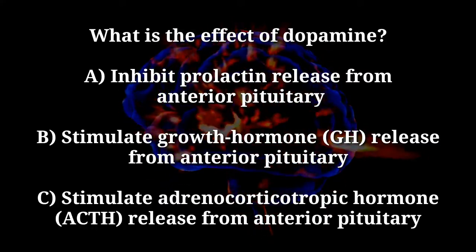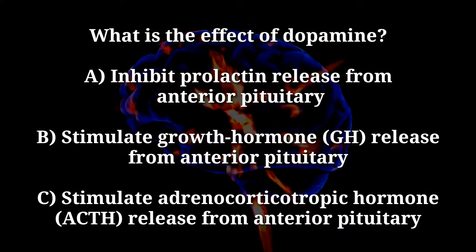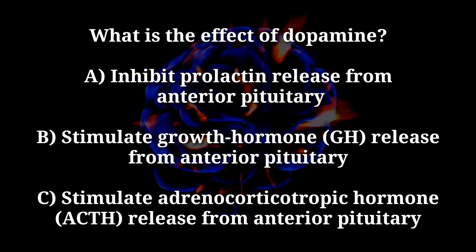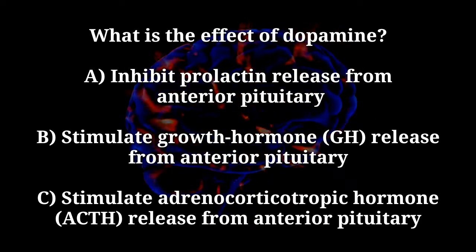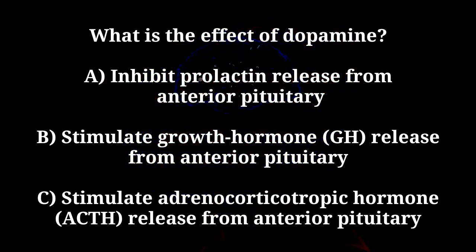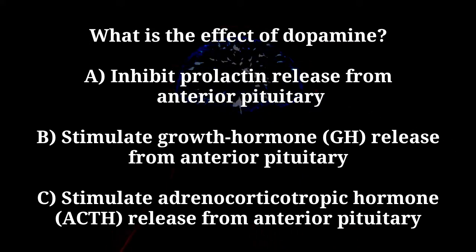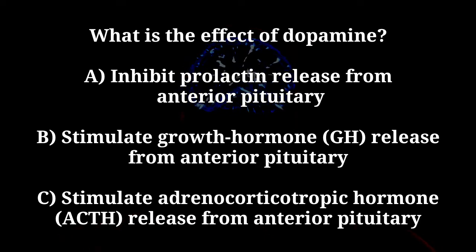What is the effect of dopamine? A. Inhibit prolactin release from anterior pituitary. B. Stimulate growth hormone (GH) release from anterior pituitary. C. Stimulate adrenocorticotropic hormone (ACTH) release from anterior pituitary.